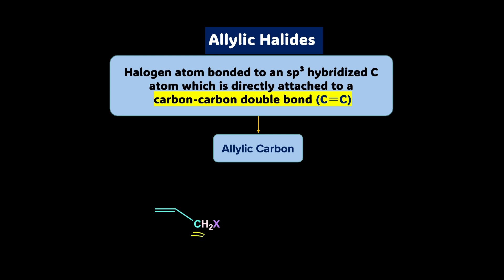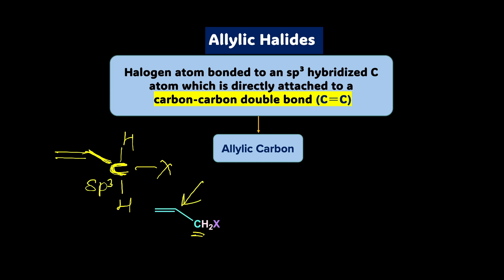Let's check the hybridization of this allylic carbon by counting the total sigma bonds: one bond to the double-bond carbon, two hydrogens, and one halogen — that's four sigma bonds, so it is SP3 hybridized. If you put the halogen on the doubly bonded carbon itself, a different category comes into picture. But here, with the double bond, then a single bond, then the halogen — this is an allylic halide. This second example is also an allylic halide: an SP3 hybridized carbon atom directly attached to the double bond.